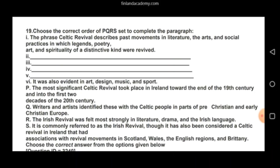Now let's look at option one again — it describes past Celtic Revival movements, and we need to fill positions two through five. We start with Q first: 'Writers and artists identified these with the Celtic people in parts of pre-Christian and early Christian Europe.' We place Q first because it explains the beginning — how Celtic cultures were identified and how it all started.